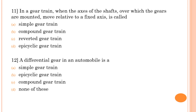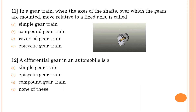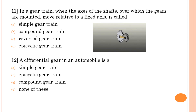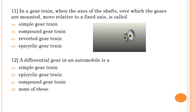Eleventh question: in a gear train when the axis of the shaft over which the gears are mounted moves relative to a fixed axis, this type of gear train is called an epicyclic gear train.